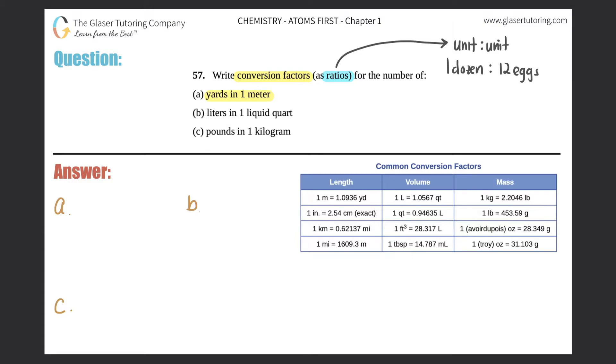But also you can put the unit on top of the other unit, and that would be classified as a ratio as well. So in my case with the dozen and eggs, I could say one dozen equals 12 eggs.